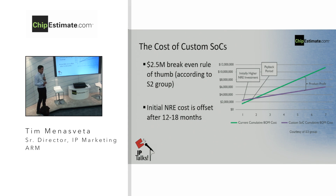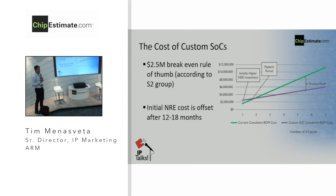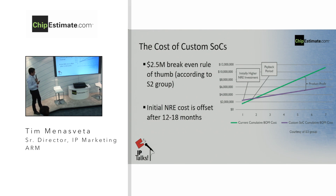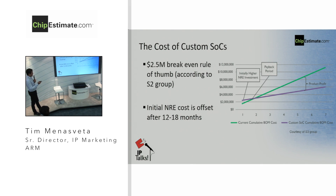We've talked about the cost of getting engineering samples for new custom SOCs — but what about production costs? S3 Group shared with us a breakeven rule they advise to their customers: if you project that your production will reach $2.5 million in cost, then it is worthwhile to build your own custom SOC. This rule of thumb breakeven point typically happens between one and a half years after product launch. Buying off-the-shelf devices has a lower NRE cost, but that breakeven point will occur somewhere after one and a half years.